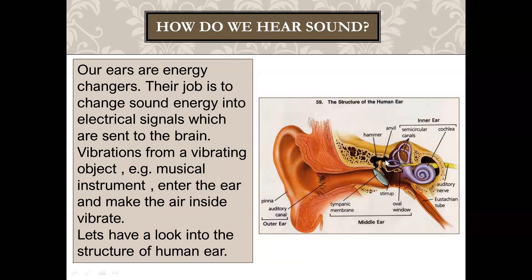The three bones are the hammer, anvil, and stirrup. These are the smallest bones in the human body — in a later clip you will see just how small they are. They are interconnected with each other.